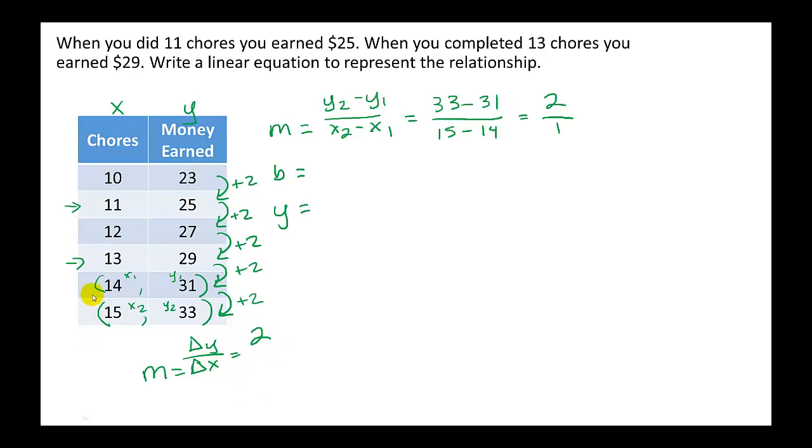On our x's we keep increasing 10 to 11 to 12 to 13, 14, 15. We're increasing by 1's all the way down so we get it's 2 over 1 which is exactly what we got when we did the equation using two points. Either way m is 2.